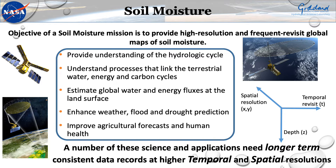The value of remote sensing based approaches is realized mostly in the fact that you have the capability of a global perspective combined with frequent revisit times. These satellites are flying at several hundred kilometers altitude and going quite fast, so you have the potential for frequent revisit times and a regional perspective of soil moisture. This provides an improved understanding of the hydrologic cycle and links the processes of the terrestrial water, energy, and carbon cycles. The key is to have a long-term consistent data record at the highest possible temporal and spatial resolution so that you can strategically merge these with in-situ observation networks.